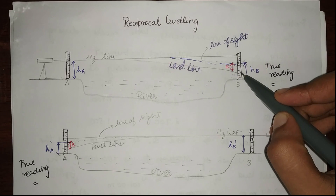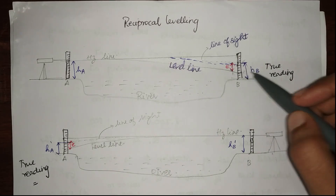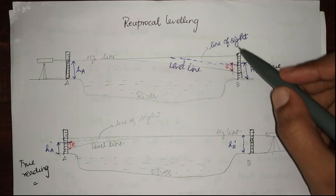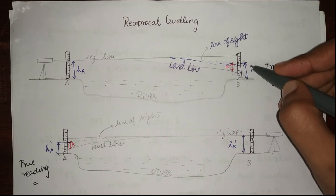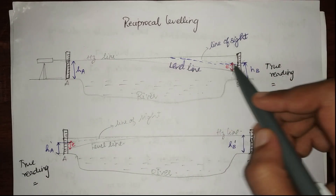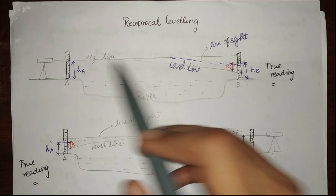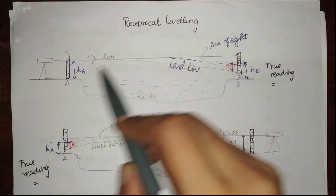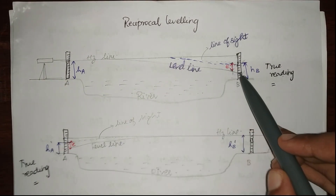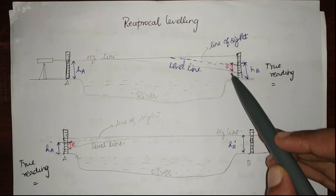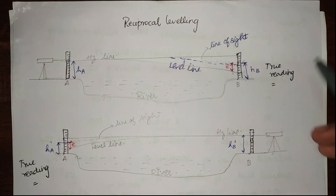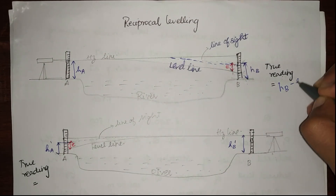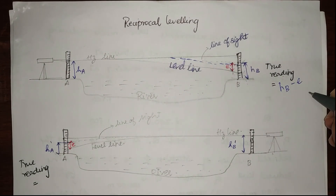Our line of sight gives some other reading, but due to the curvature error our level line will be below it. So in order to find the true reading I have to subtract the curvature error. hB is the reading which I've got from the line of sight — it is the value which I see through the telescope — but my level line lies lower due to curvature error. So my true reading is going to be hB minus the curvature error.